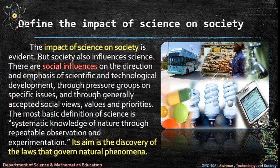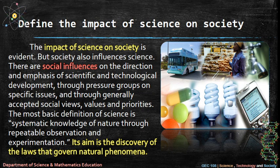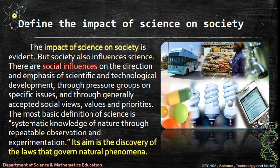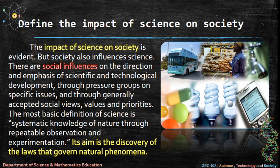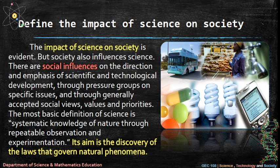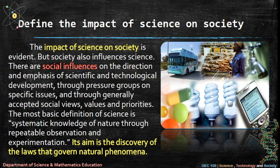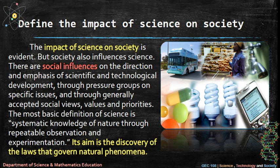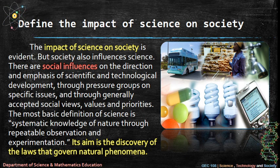The impact of science on society is evident, but society also influences science. There are social influences on the direction and emphasis of scientific and technological development — through pressure groups on specific issues, and through generally accepted social views, values, and priorities. The most basic definition of science is systematic knowledge of nature through repeatable observation and experimentation, with the aim of discovering the laws that govern natural phenomena.